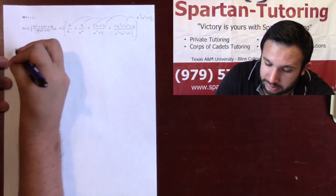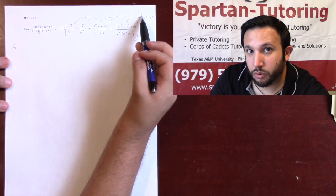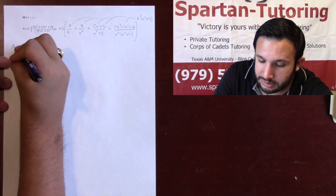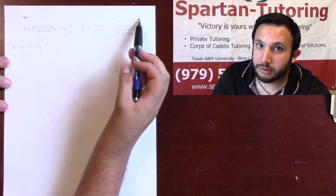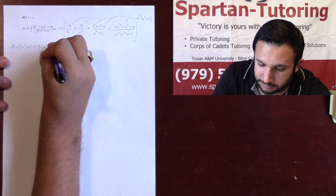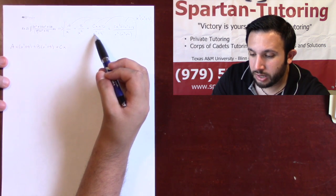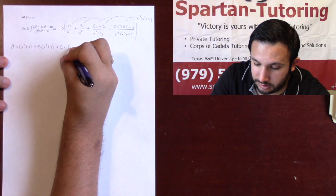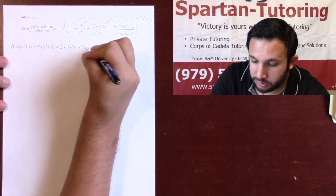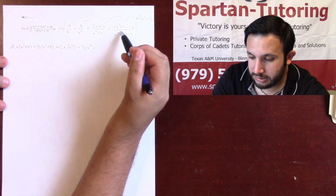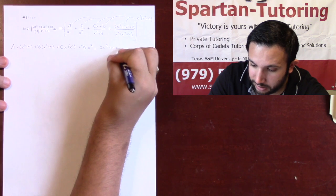Let's take a look at A. When I distribute the denominator into the A fraction, the x squared will only cancel with one of the x's, leaving x times x squared plus 9. With B, the x squared completely cancels, leaving x squared plus 9. With Cx, the x squared plus 9 cancels, leaving x squared times C. And with D, x squared plus 9 cancels too, so D is multiplied by x squared. On the right side, everything cancels and you're left with the numerator: 2x cubed plus 11x squared plus 18.